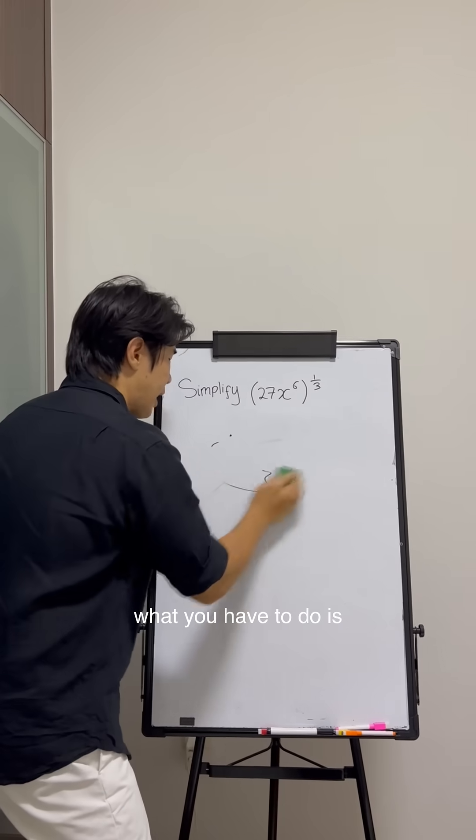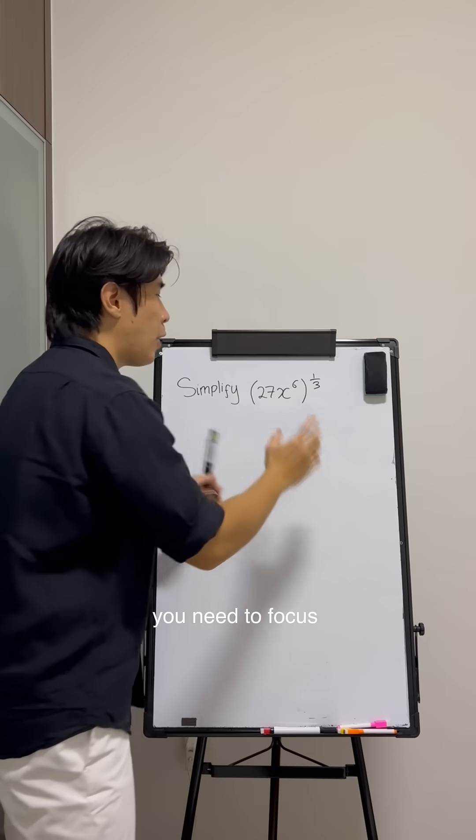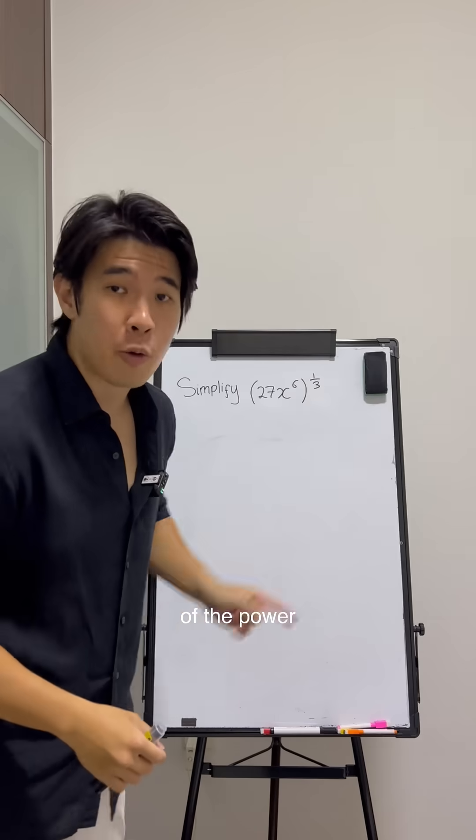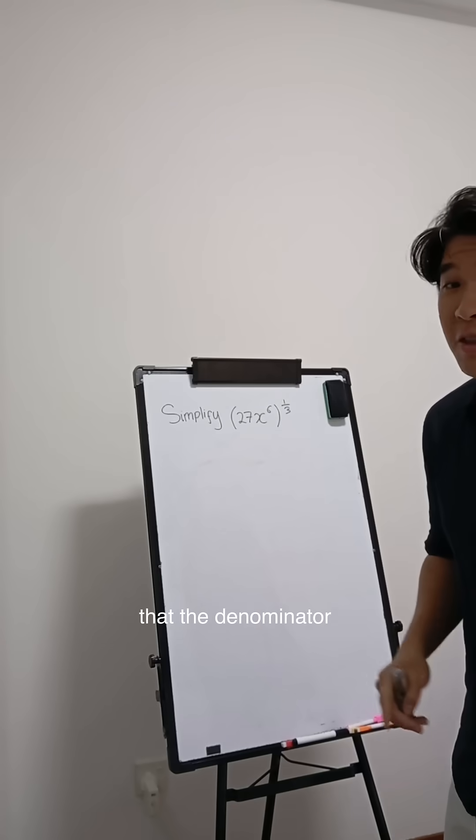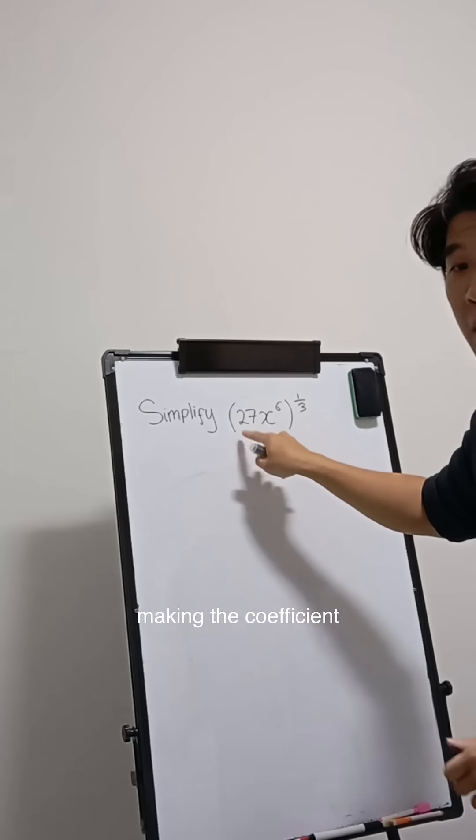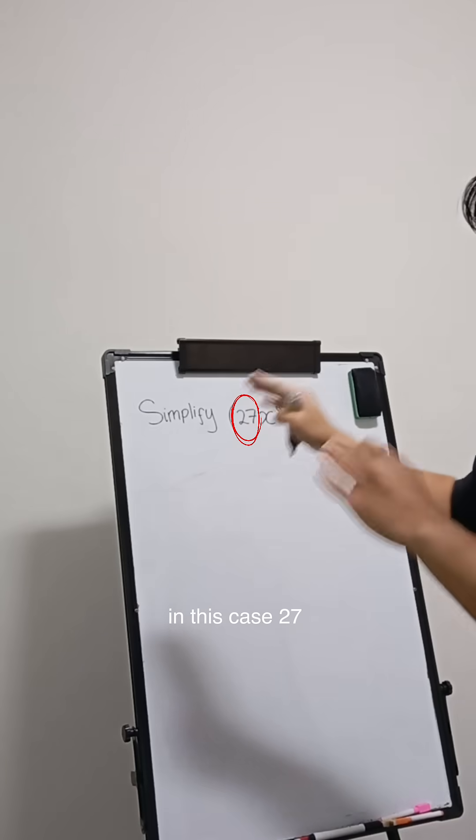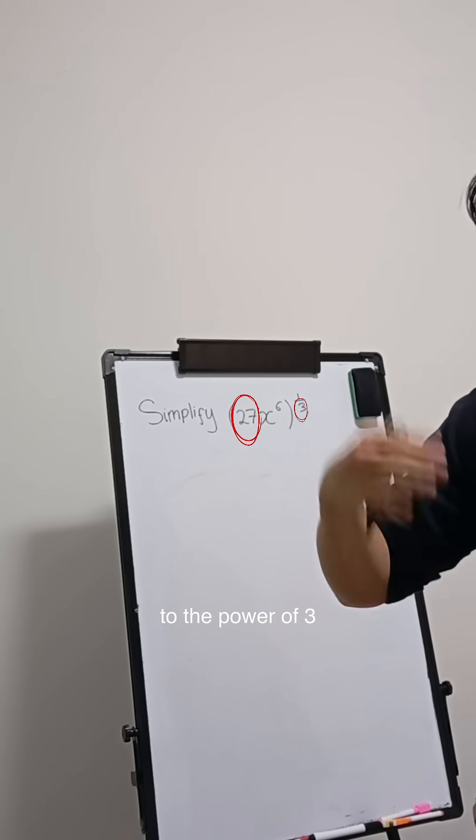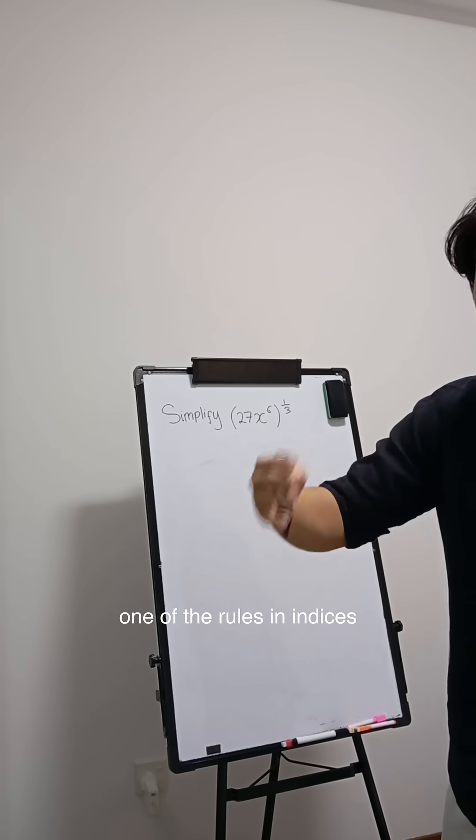But instead, what you have to do is focus on the denominator of the power, which is 3. Since we know that the denominator of the power is 3, we need to focus on making the coefficient, in this case 27, to be something to the power of 3. Later on, we can use one of the rules of indices.